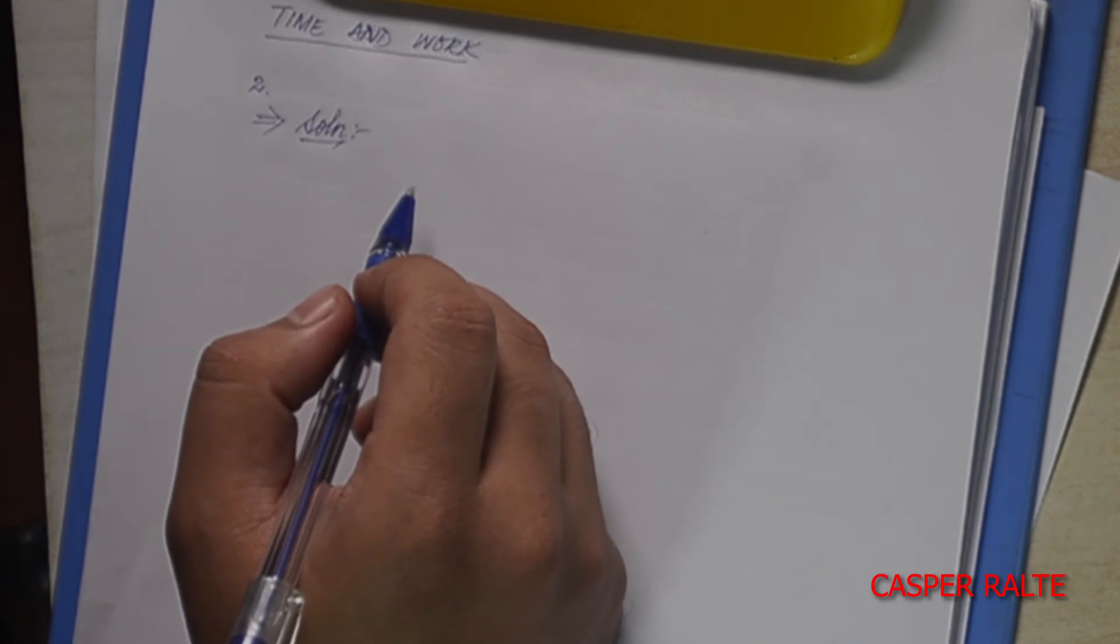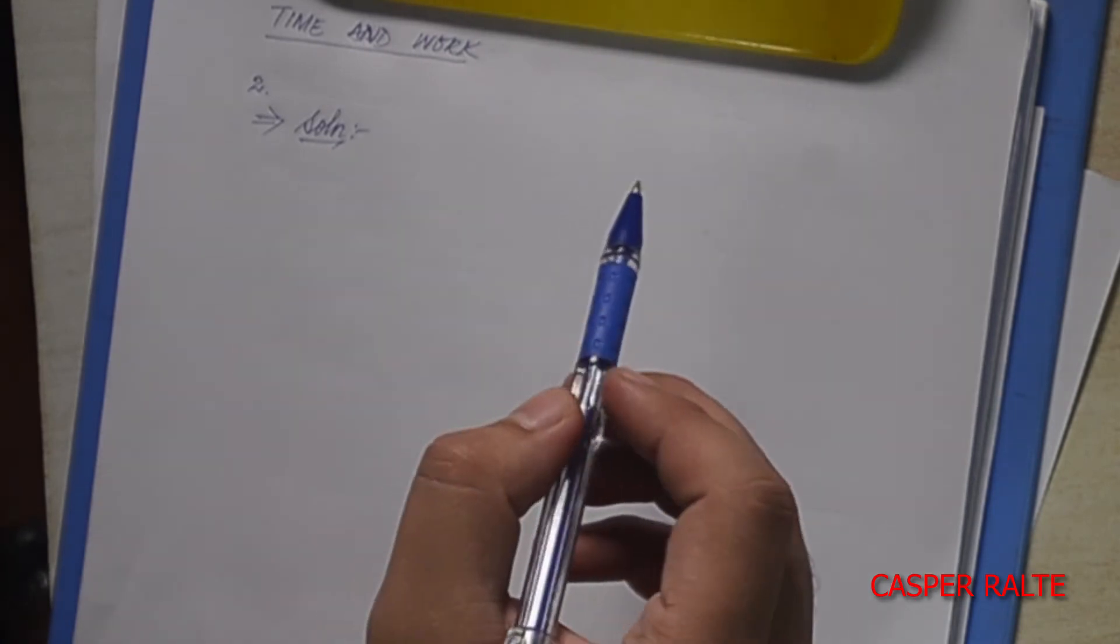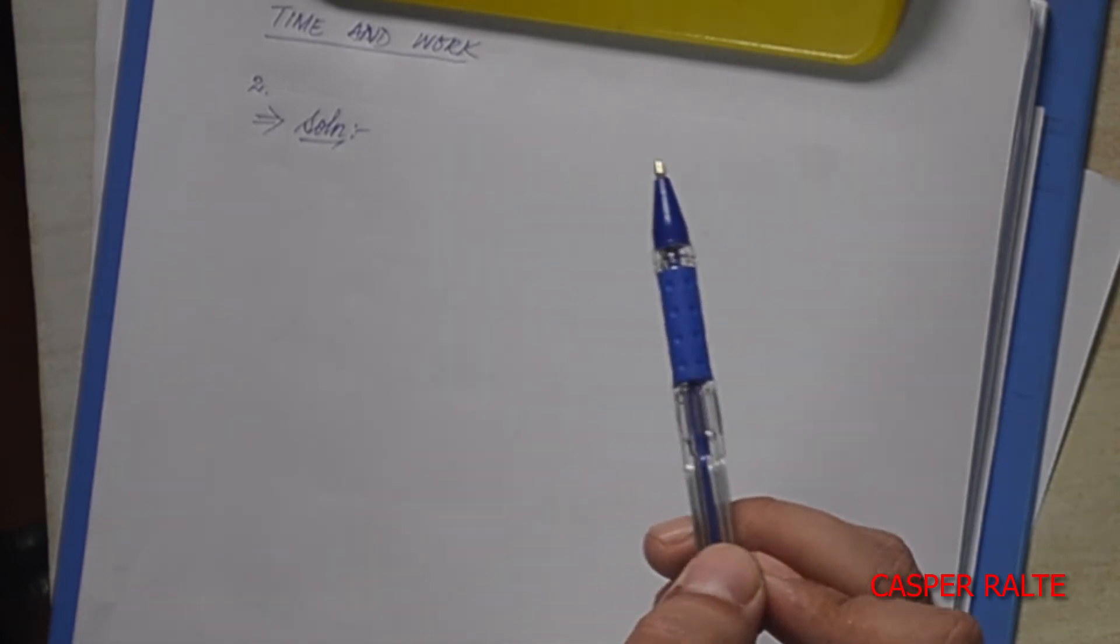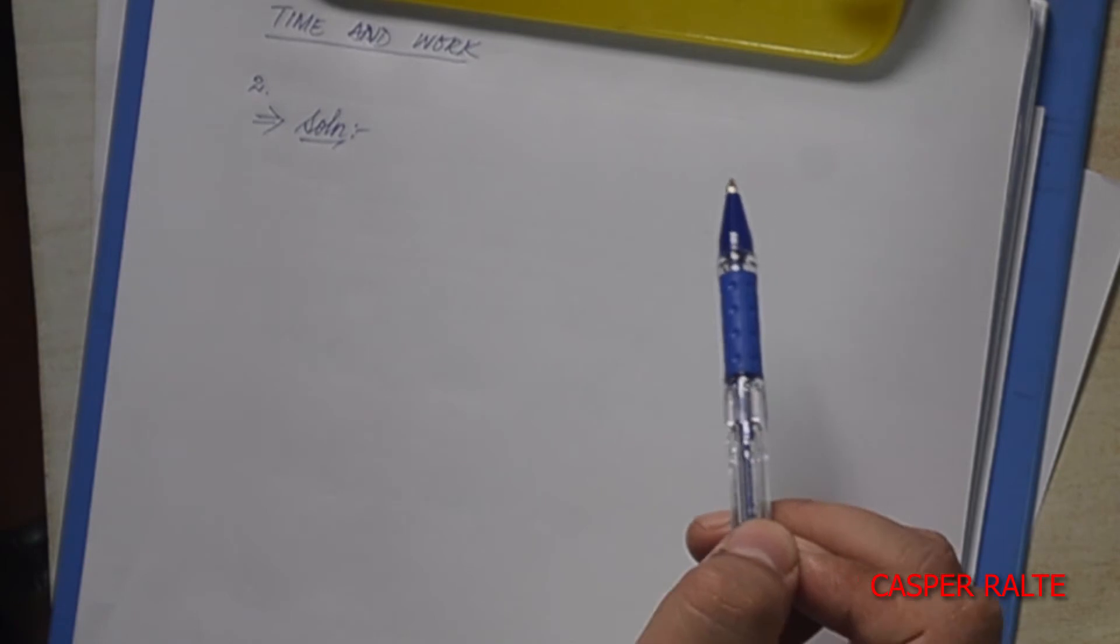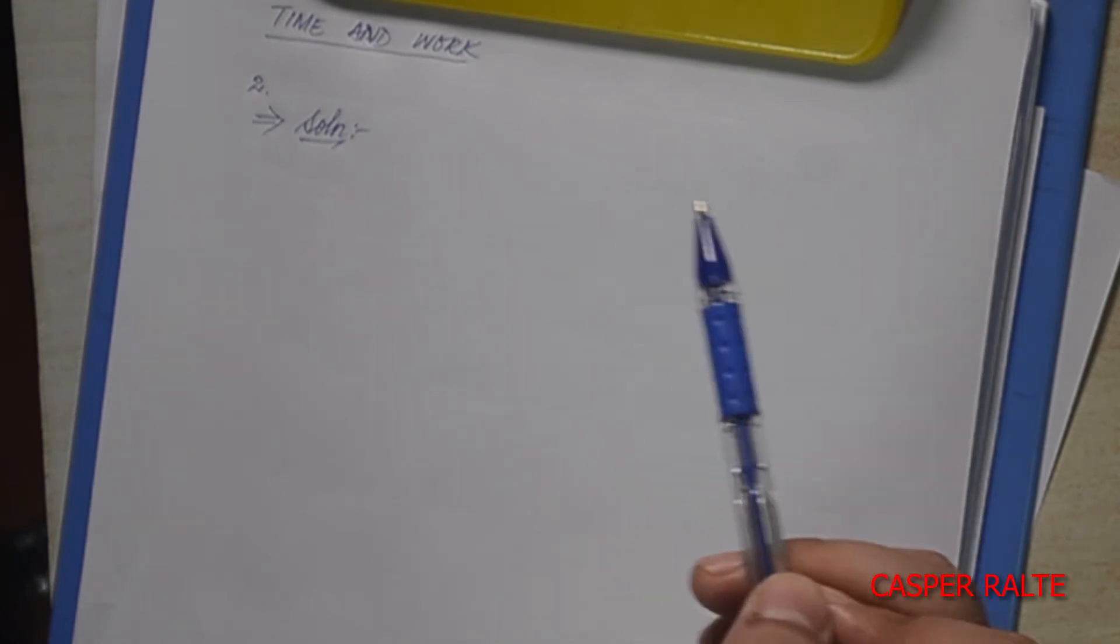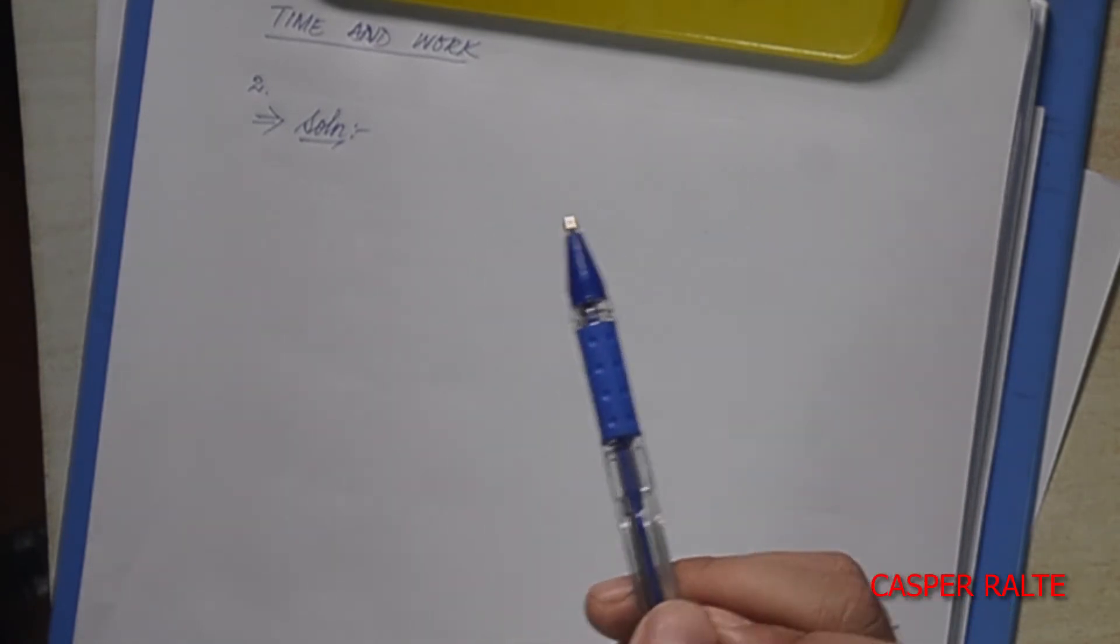A can finish a piece of work in 18 days, and B can do the same work in 15 days.